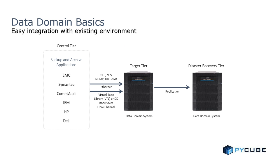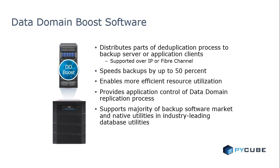After the data is stored and deduplicated during the storage process, it can replicate for disaster recovery. Only the compressed, deduplicated unique data segments that have been filtered out through the right process on the target tier are going to be replicated. Data Domain Boost is a software option supported across the entire Data Domain family that distributes parts of the deduplication process out of the Data Domain system and onto the backup server or application client. This speeds backups up by up to 50% and enables more efficient resource utilization, including reducing the impact on the server by 20% to 40% and reducing the impact on the network by 80% to 99%. In addition, DD Boost enables the application to control the Data Domain replication process with full catalog awareness of both the local and remote copies of the backup. DD Boost is supported with the majority of backup software market as well as with industry-leading database utilities.